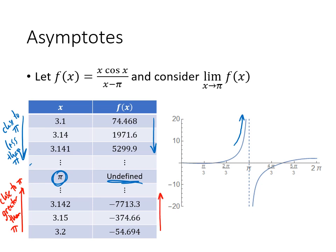On the other hand, as my x values get closer to pi from the other side, negative 54.6, negative 374, negative 7,713, what I'm seeing is that my y values are shooting down into the basement. And so what we have is what we call an asymptote. So this dotted line here is called an asymptote.